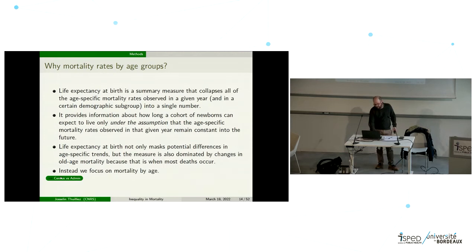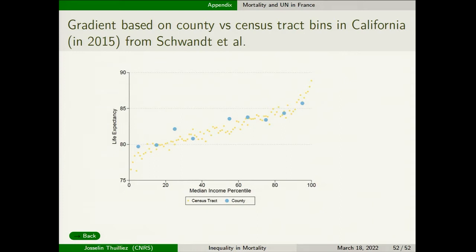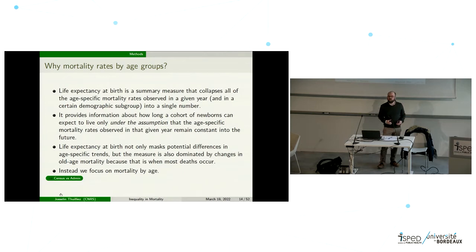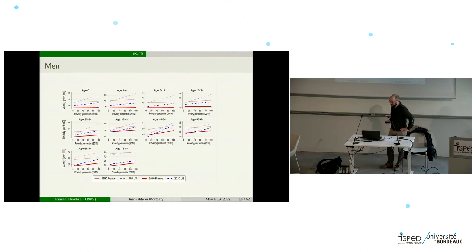Instead, we focus on mortality by age. My co-authors have shown recently that using individual data or aggregating the ranking we use produces basically similar results — they do this work in California, comparing life expectancy by median income percentile bin at the aggregate level versus individual observations from the census, and find basically the same trend. This means we can use this approach at a rather macro level without too many risks.